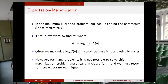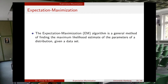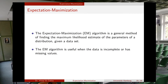However, for many problems it is not possible to solve this maximization problem analytically in closed form, and we need other approaches. The expectation maximization algorithm is a general method of finding the maximum likelihood estimate of the parameters of a distribution given a dataset. The EM algorithm is especially useful when the data is incomplete or has missing values.